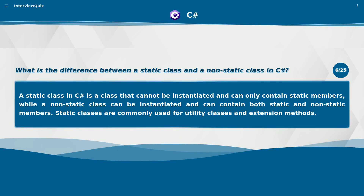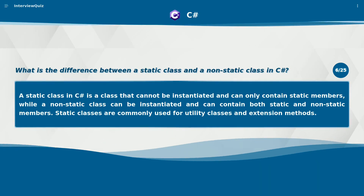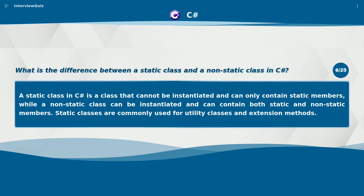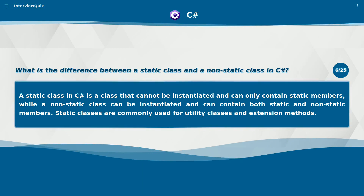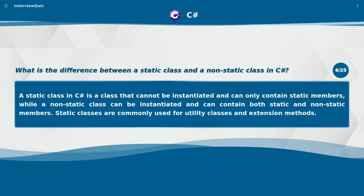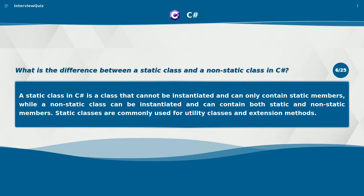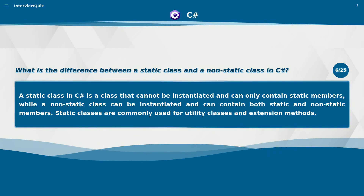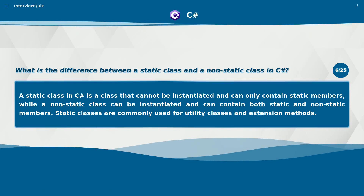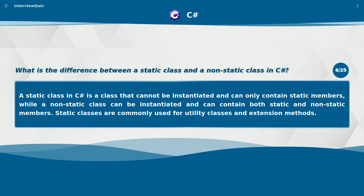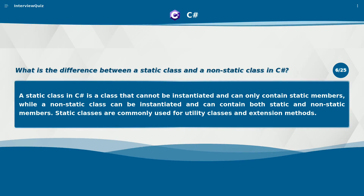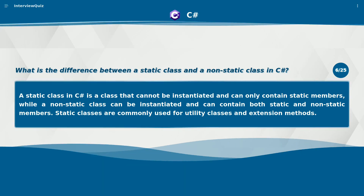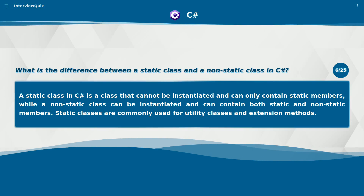What is the difference between a static class and a non-static class in C#? A static class in C# is a class that cannot be instantiated and can only contain static members, while a non-static class can be instantiated and can contain both static and non-static members. Static classes are commonly used for utility classes and extension methods.